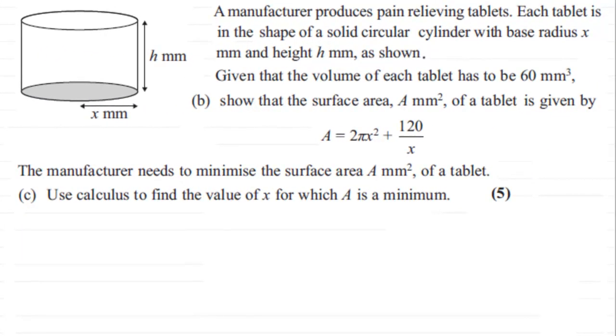Hi. Now in the previous part of this question, we were told that the manufacturer produced these pain relieving tablets in the form of this solid cylinder and it had a volume of 60 millimeter cubes. And we had to show that the surface area A for each tablet was given by this formula here.